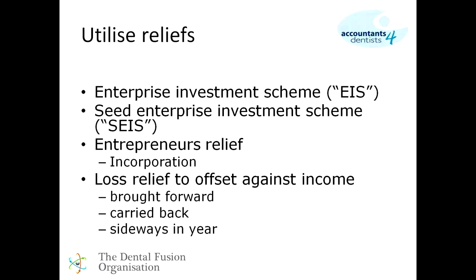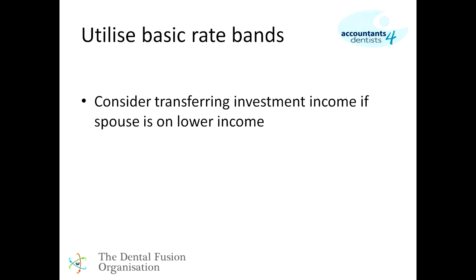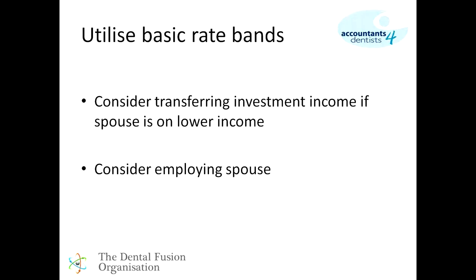Let's go back to some basics and make sure we're using our basic rate bands. If your wife, husband, or partner is on a lower level of income, do consider transferring some investment income across to them and have them paying tax at 20% rather than 40% or 50%. And if your other half is working in the business or doing some administrative duties, do consider getting them on the payroll to save a good few percent in tax.